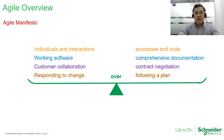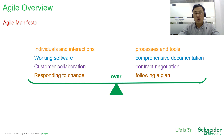The Agile Manifesto: individuals and interactions over processes and tools; working software over comprehensive documentation; customer collaboration over contract negotiation; responding to changes over following a plan.